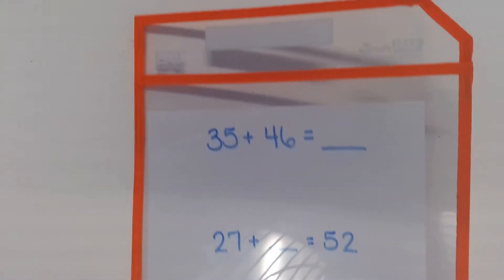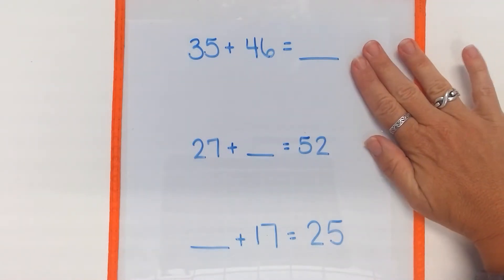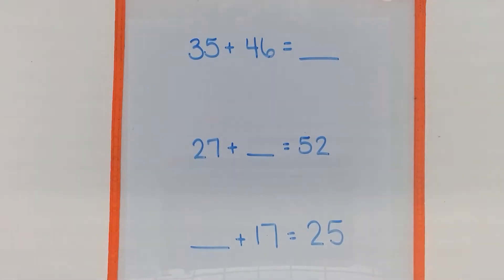The next TEKS that the students are going to be working on is where they have to generate a word problem from given number sentences. So these are all addition number sentences that could be used and students can generate whatever story problem as long as it matches the number sentence that's given. Students are probably going to be most successful at the top one. I have something, I'm joining or putting something together and I'm looking for a result.